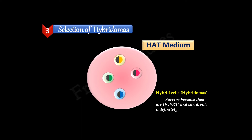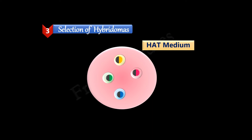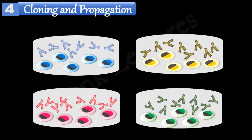The hybridoma cells alone can survive, as they can synthesize nucleotides by the salvage pathway, which is attributed to the active HGPRT gene from the B cells. They can also divide immortally and secrete antibodies, which are characteristics attributed to the myeloma cell. The hybridomas are then isolated and produced at a larger scale for commercial applications.